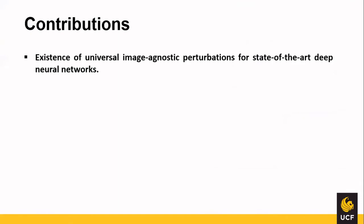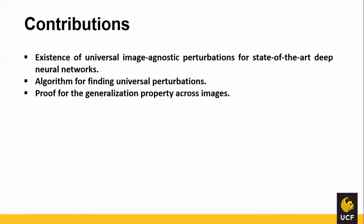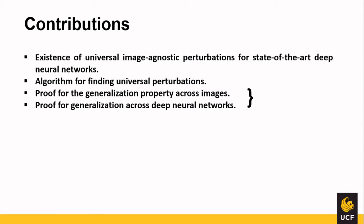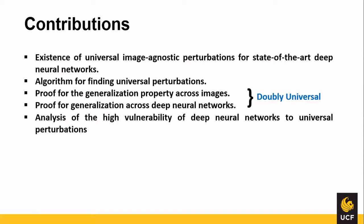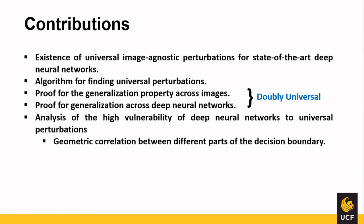Here are the major contributions of this paper. They proved the existence of universal image-agnostic perturbations for six state-of-the-art deep neural networks. They provided an algorithm for finding such universal perturbations. They proved that these perturbations are generalizable across images and also provided proof for generalization across deep neural networks — calling these perturbations doubly universal in nature. They also provide a detailed analysis of the high vulnerability of deep neural networks, and claim there is a geometric correlation between different parts of the decision boundary that allows universal perturbations to exist.